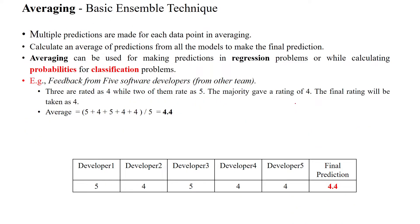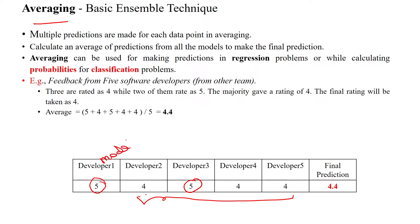For averaging: model one gives output five, model three also gives output five. We get different outputs from the various models — ML model one, ML model two, ML model three — multiple models combined together.